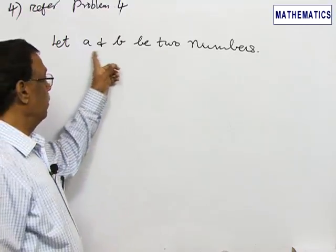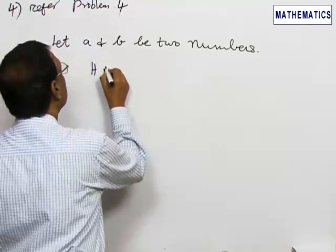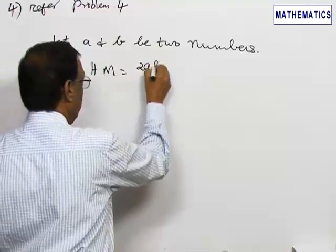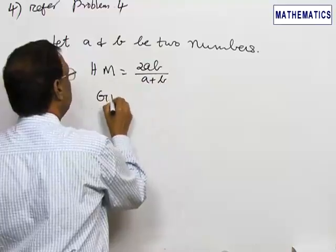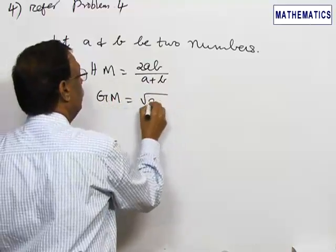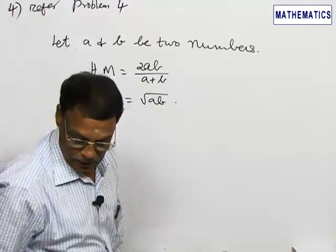We will assume that A and B are two numbers. What is harmonic mean? Harmonic mean of two numbers is 2AB by A plus B and what is GM geometric mean root of AB. The ratio is given as 12 by 13.